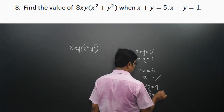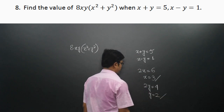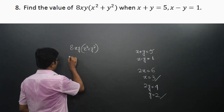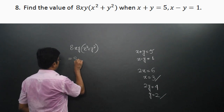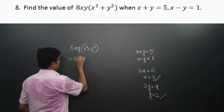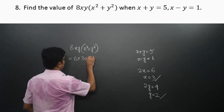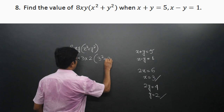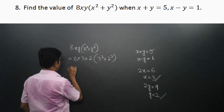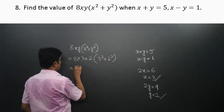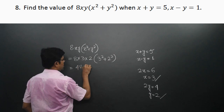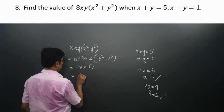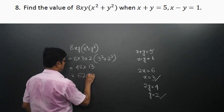So the value of x is 3 and the value of y is 2. Now let's calculate: it is equal to 8 × 3 × 2 × (3² + 2²), that is 48 × 13, which equals 624.